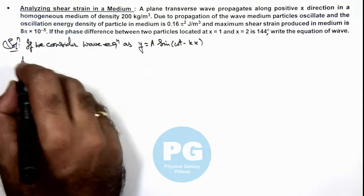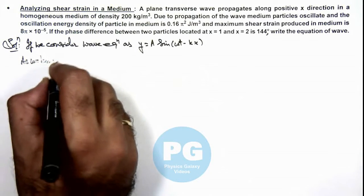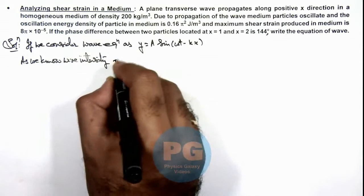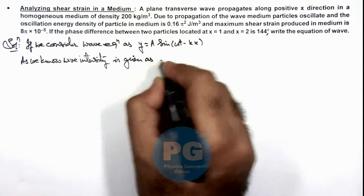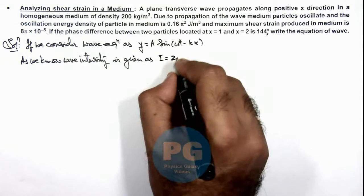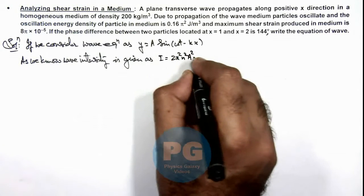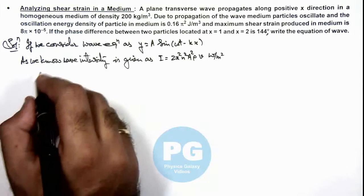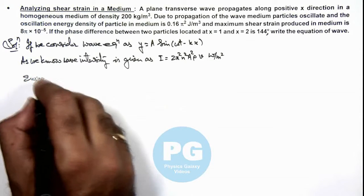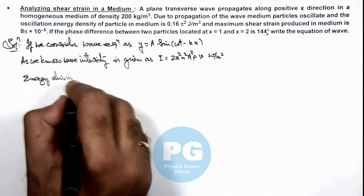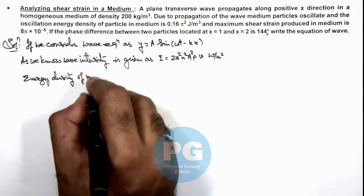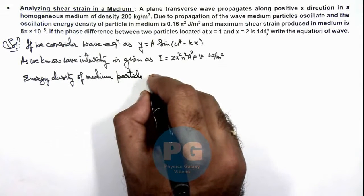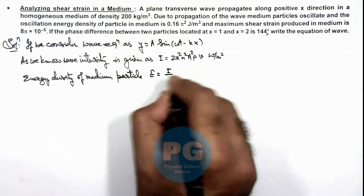So now we can write as we know wave intensity is given as, we already studied that wave intensity is given by 2π²n²ay²ρv, it is given in watt per meter square. And using intensity we also discussed that energy density, that is energy per meter cube of medium particles, is given as...